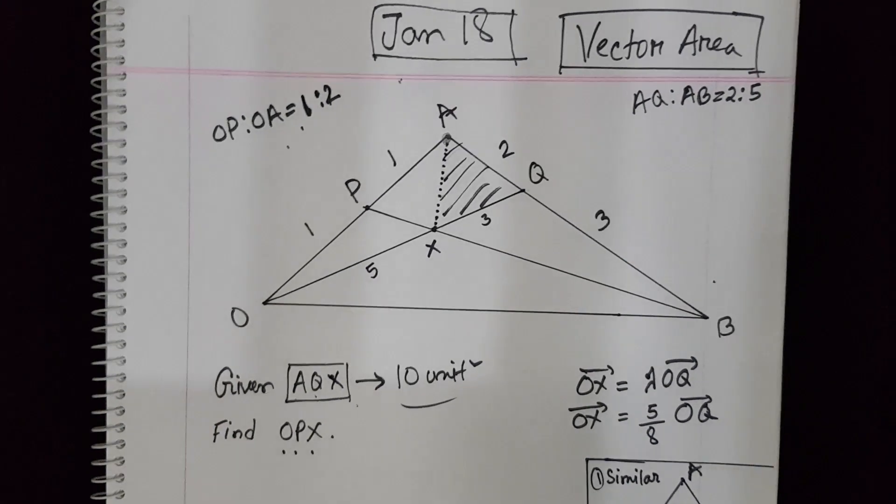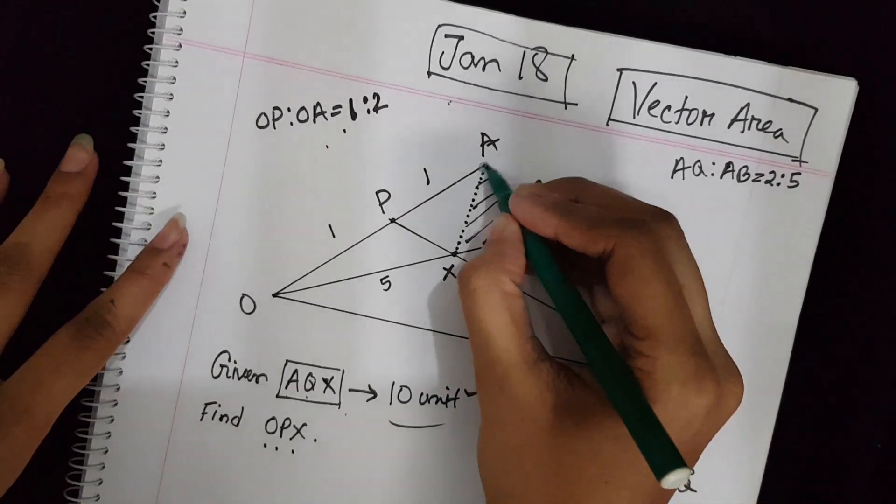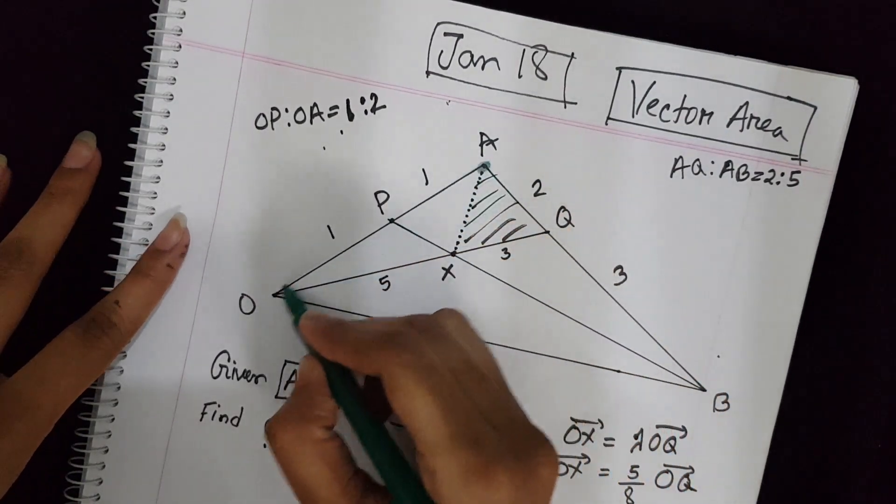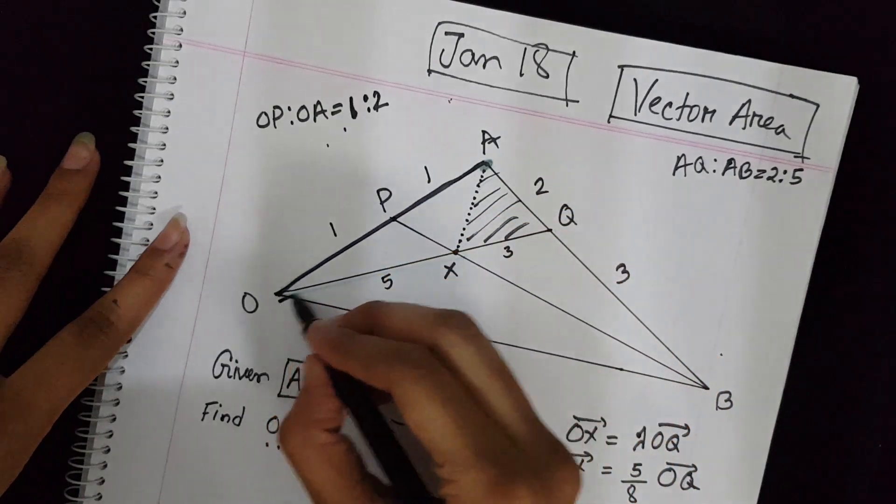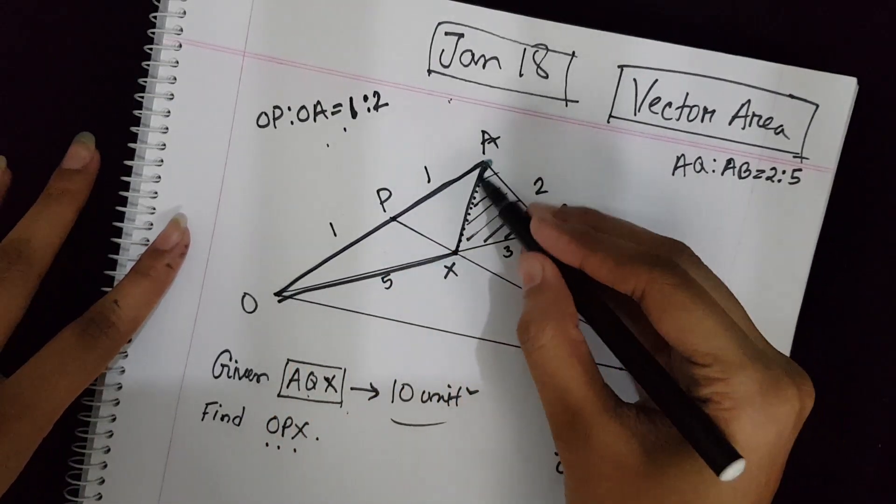So in this triangle, if we take A as the common point, we have two triangles. Suppose we have triangle AOX and triangle AXQ.